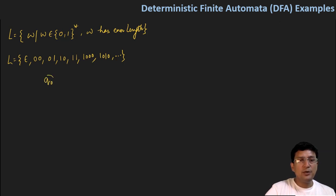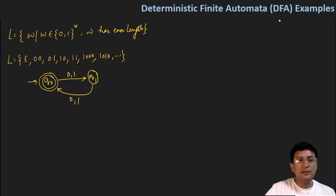So both symbols are in the automaton, because epsilon is going to be accepted. So the start state will also be the final state. After that, if I get a 0 or 1, I will move to some Q1 state, which is a non-final state. If I get another 0 or 1, I should move back to the final state. So a length-0 string is accepted, length-1 is not, length-2 is accepted, length-3 is rejected, length-4 is accepted, length-5 is rejected, and so on.